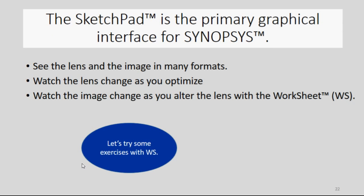Now we looked at that with the sketch pad, which is the primary graphical interface for Synopsis. That lets you see the lens and the image in a whole bunch of different formats. You can watch it change as you optimize, and you can even alter the lens with the worksheet. Let's try some exercises with the worksheet, just to show how that works.